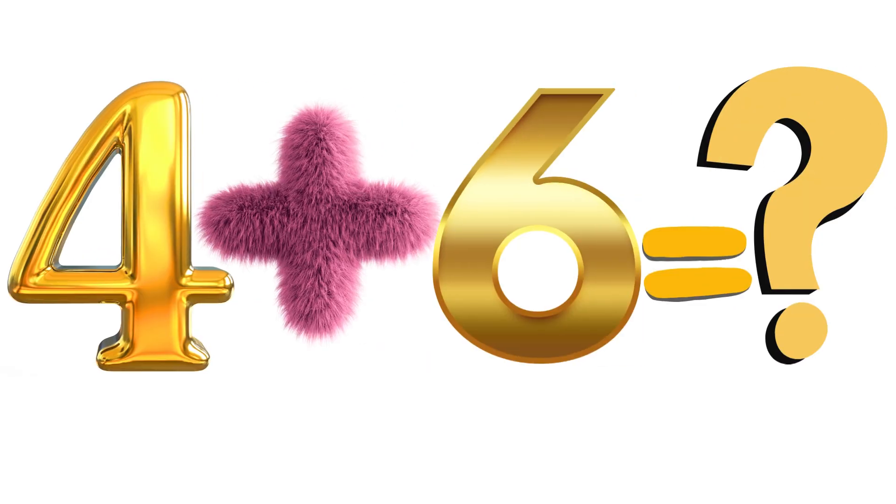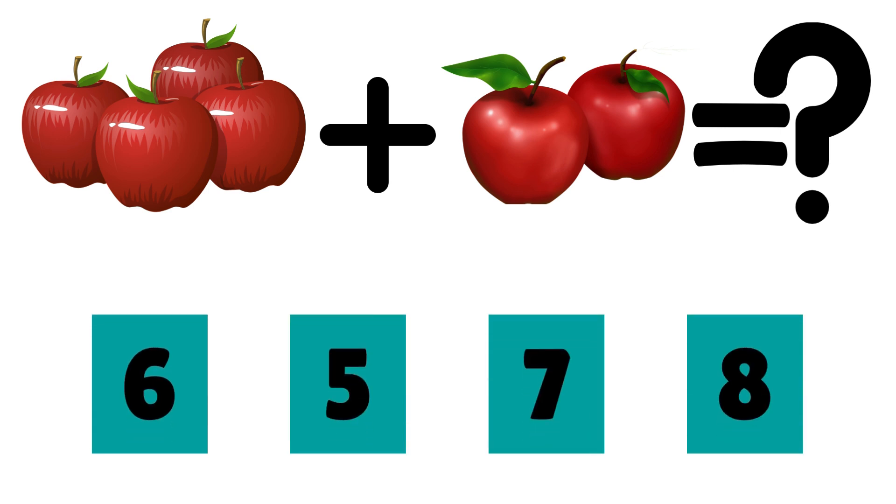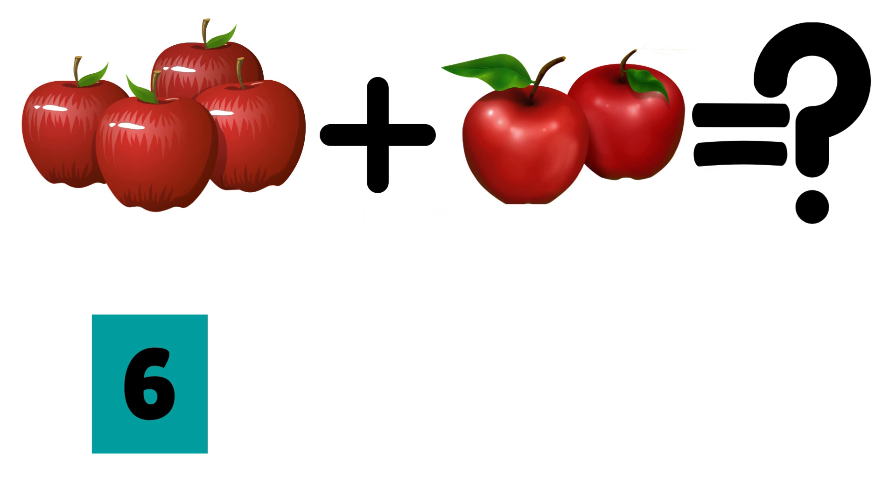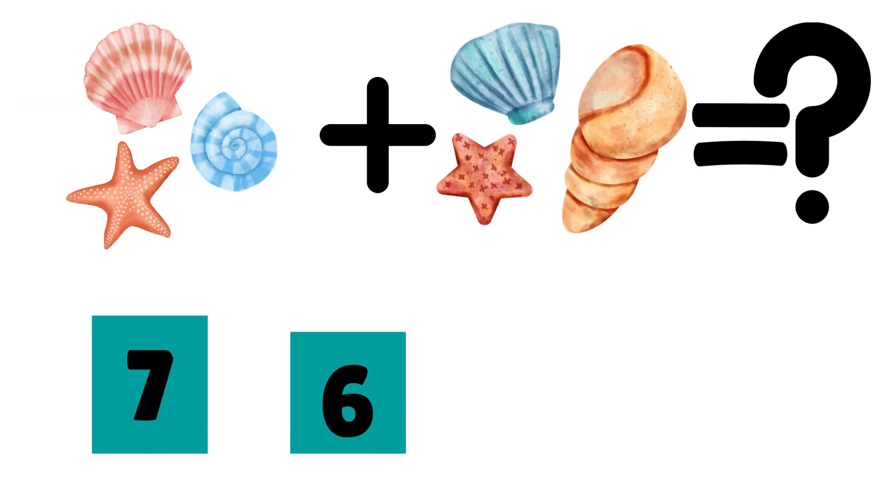One digit addition quiz for kids. Look at these apples. There are three apples and two apples. How many apples do we have in total? What did you get? The correct answer is six. Four plus two is equal to six. Great job!